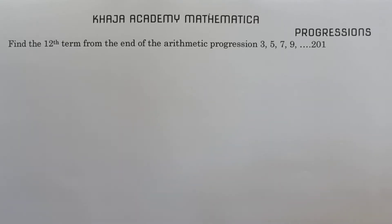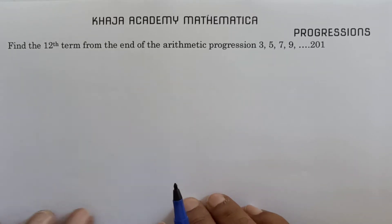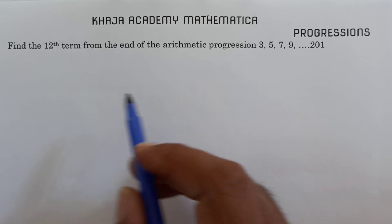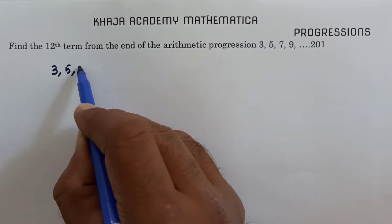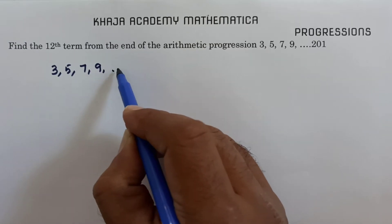Find the 12th term from the end of the arithmetic progression 3, 5, 7, 9, ..., 201. So here I need to find the 12th term from the end. The series is 3, 5, 7, 9, and so on, 201.